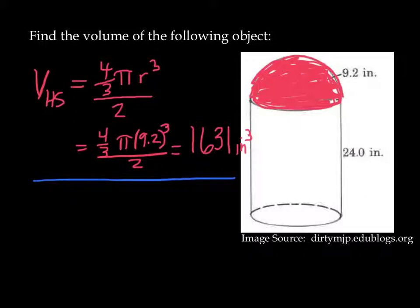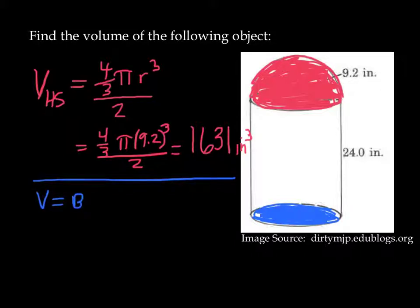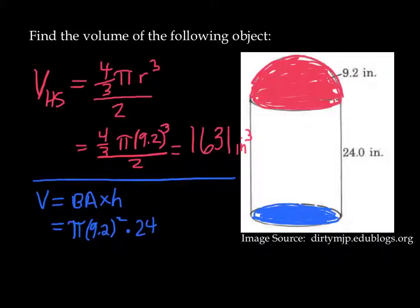Next, in blue here, we're going to look at the cylinder. The cylinder is just a right prism — I have a base area and multiply that by a height. The definition of volume is base area times height. My base area is just a circle: pi r squared, and the radius is 9.2. The height of this object is 24 inches. So that's pi times 9.2 squared times 24, which works out to 6,382 cubic inches, rounding up.